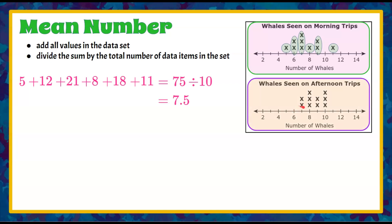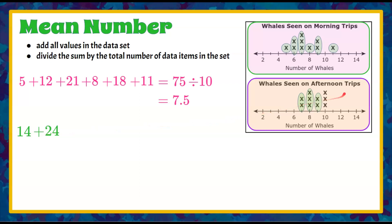Now we want to find the mean for afternoon — how many whales were seen on average in the afternoon? We have two sevens, three eights, two nines, and three tens, giving us ten data points. So we're comparing ten morning trips to ten afternoon trips. Seven plus seven is fourteen; three eights is twenty-four; two nines is eighteen; three tens is thirty. Adding all that up we get 86, and dividing by ten gives us 8.6.